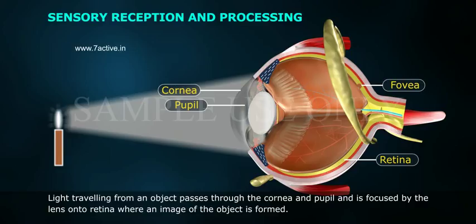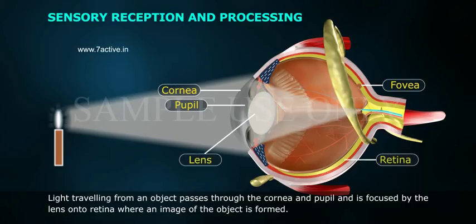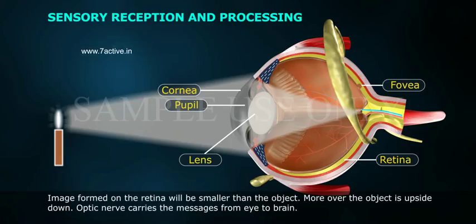Light is focused by the lens onto the retina, where an image of the object is formed. The image formed on the retina will be smaller than the object, and moreover, the object appears upside down.